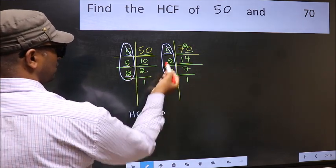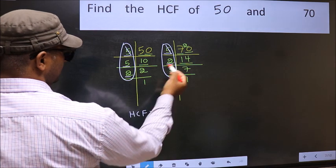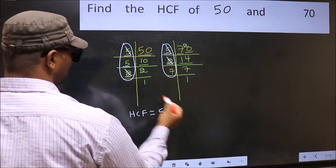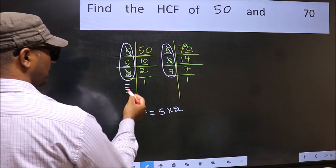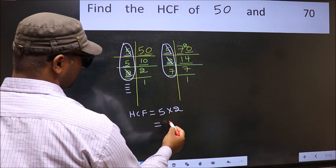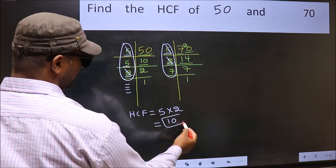Next number 2. Do we have 2 here? Yes. So cut 2 right here. No more numbers have been left out. So our HCF is 5 into 2. 10 is our HCF.